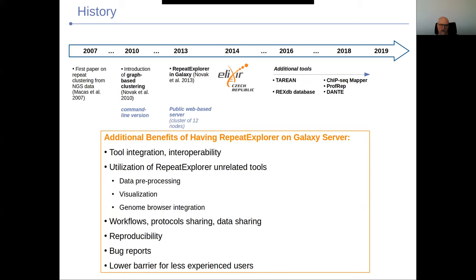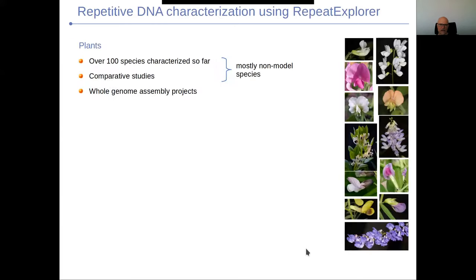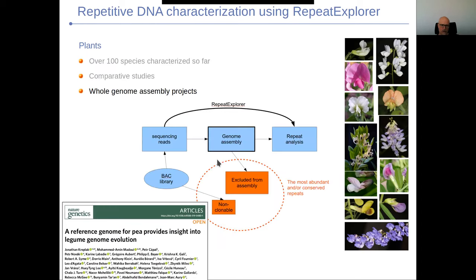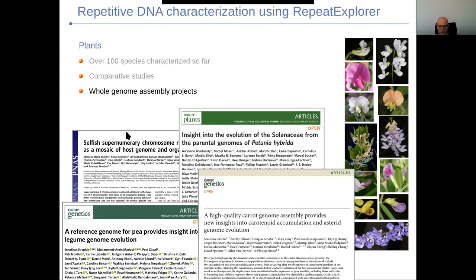What you're getting by putting your tool on a Galaxy server is a really lower barrier for less experienced users — our users are mostly biologists not really interested in bioinformatics. Because we moved Repeat Explorer to a Galaxy server, from published papers we know that this server was used for analysis of over 100 plant species, for comparative analyses, and for whole genome assembly projects — since our server can also be used for annotation of complete genomes. There was also a bigger impact because even though we designed it with focus on plant biology, many people used it for analysis of mammals, fish, insects, and worms.